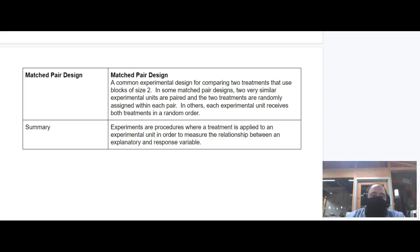Experiments are procedures where treatment is applied to an experimental unit - if they're humans, we call them subjects - in order to measure the relationship between an explanatory variable and a response variable. All of this is about how to do that in a productive and useful way. For the next several classes, this is what we're going to be looking at.